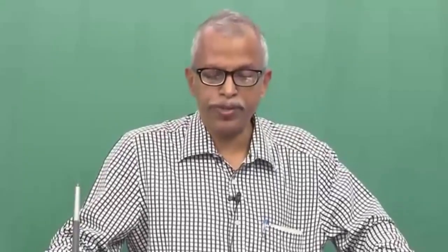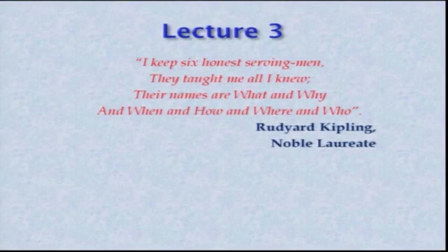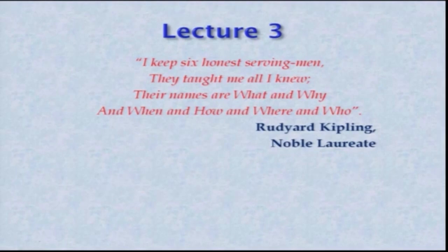Let us start this lecture with a thought process from Rudyard Kipling, who is a well-known Nobel laureate. He states: I keep six honest serving men, they taught me all I knew. Their names are What, Why, When, How, Where, and Who.